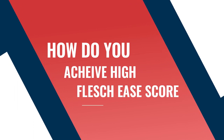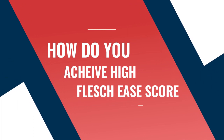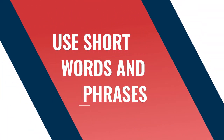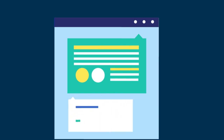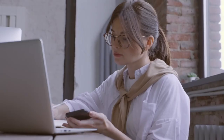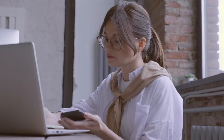How do you achieve a high Flesch Reading Ease score? There are a few things you can do to improve it. First, use short words and phrases. As mentioned, the shorter the words and phrases, the easier the reading will be. Try to avoid long and complicated words whenever possible.